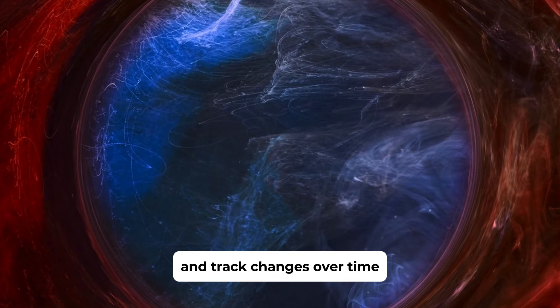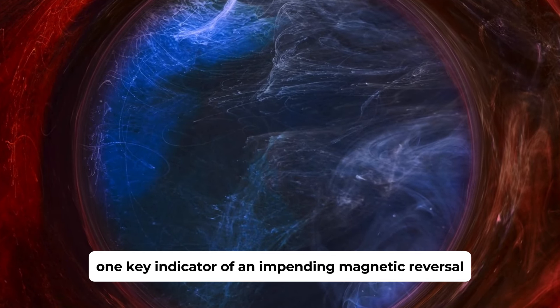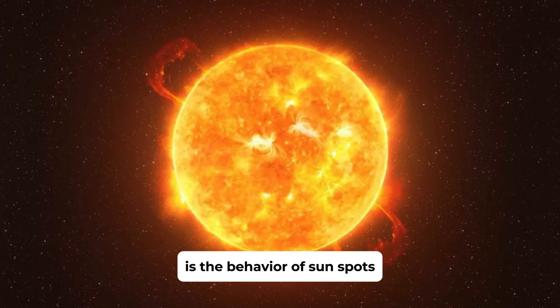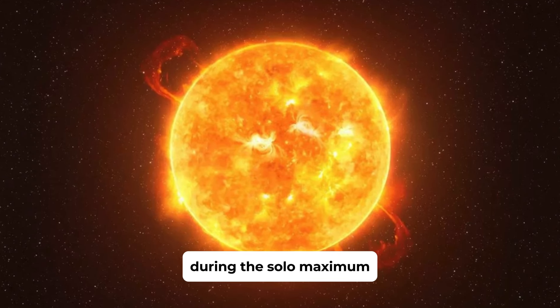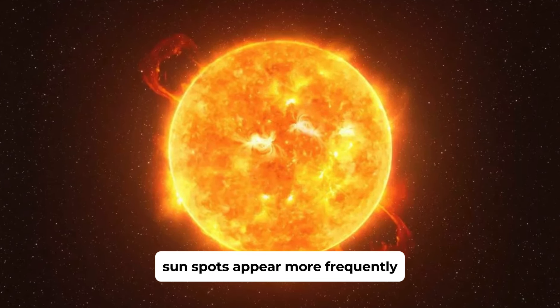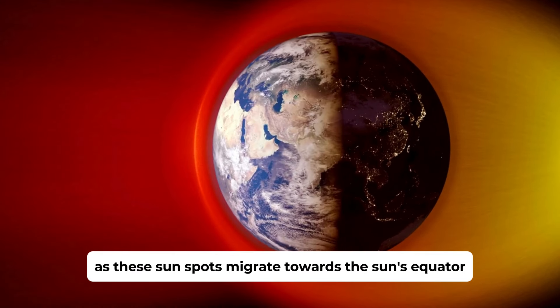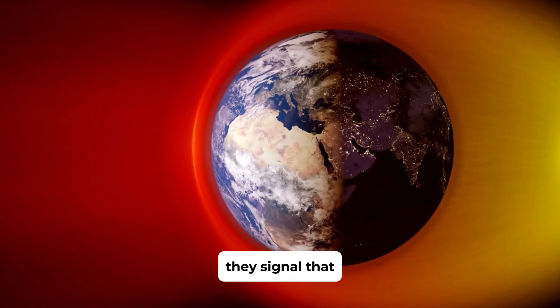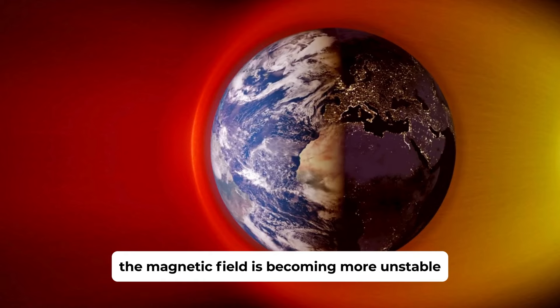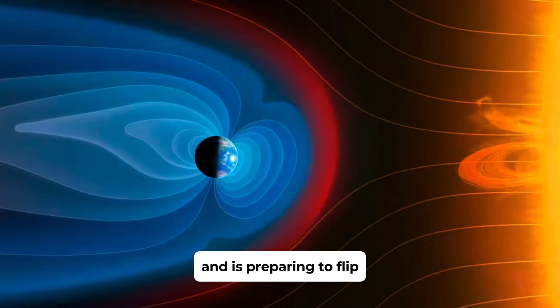One key indicator of an impending magnetic reversal is the behavior of sunspots. During the solar maximum, sunspots appear more frequently and are more pronounced. As these sunspots migrate towards the Sun's equator, they signal that the magnetic field is becoming more unstable and is preparing to flip.